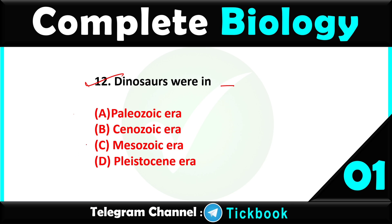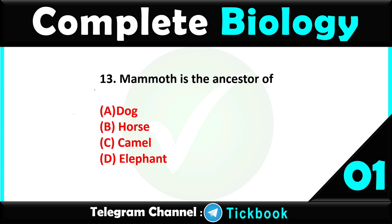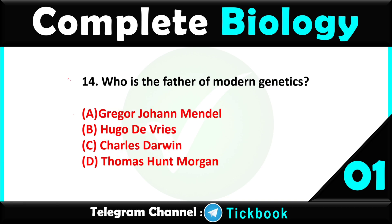Question number twelve: dinosaurs were in — option number C is the right answer: the Mesozoic Era. Question number thirteen: mammoth is the ancestor of — option number D, elephant, is the right answer.